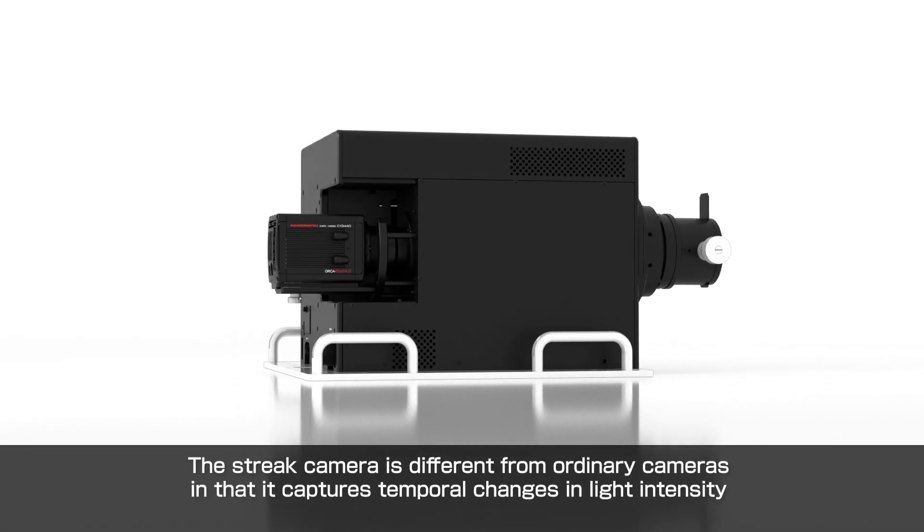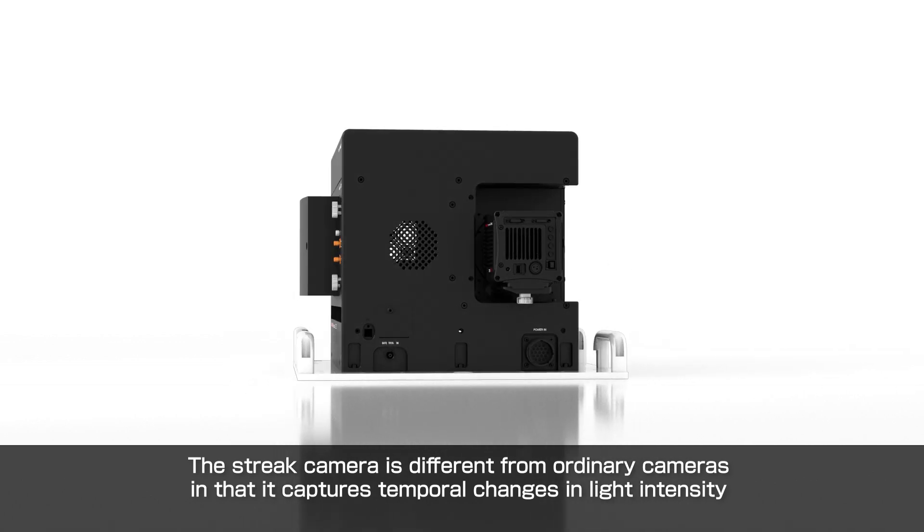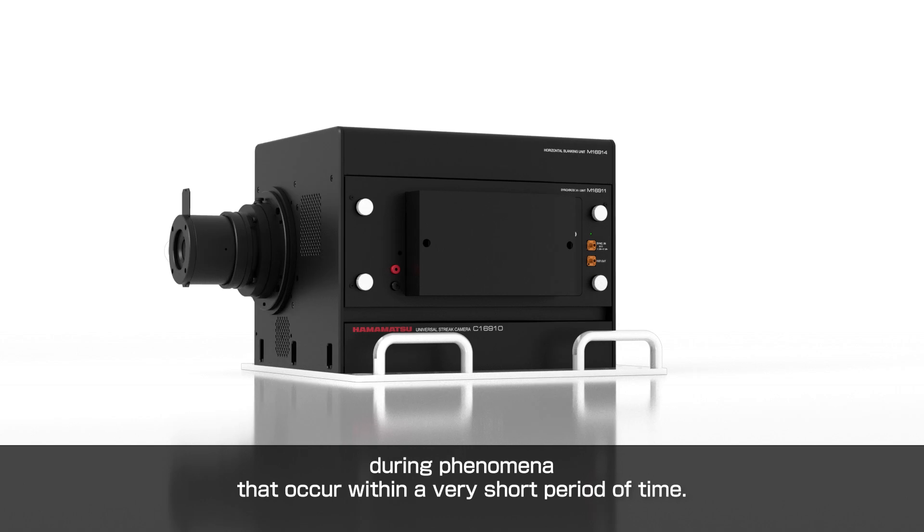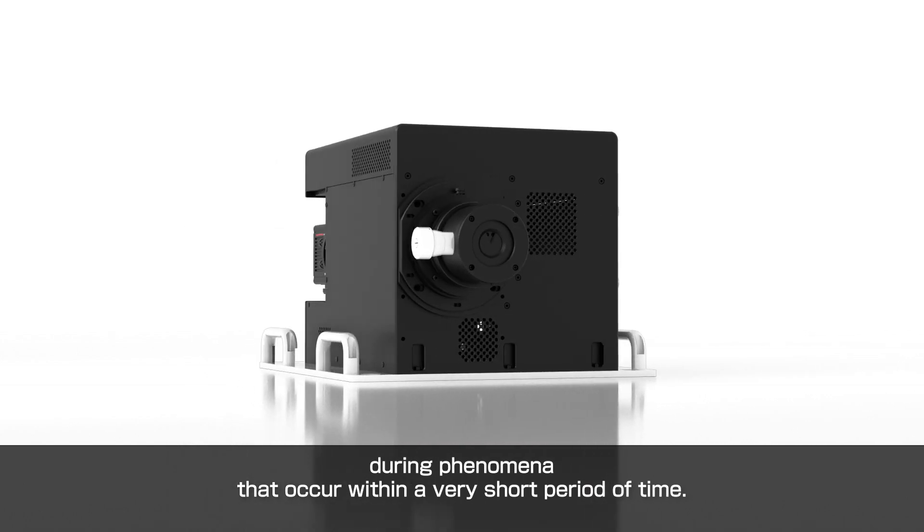The streak camera is different from ordinary cameras in that it captures temporal changes in light intensity during phenomena that occur within a very short period of time.